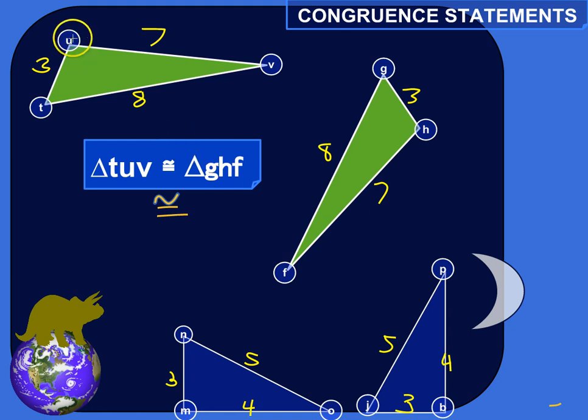So that means that the triangle which is formed by connecting the three points T, U, and V, this triangle is congruent to the triangle formed by connecting the points G, H, and F.